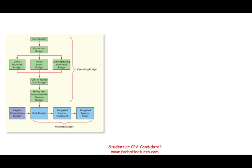You need to know the various components, such as the sales budget, the production budget, direct material, labor, overhead, cost of goods sold, selling, and administrative — which are all called the operating budget. You also need to know about the capital expenditure budget, the cash budget, the budgeted net income, and the budgeted balance sheet.